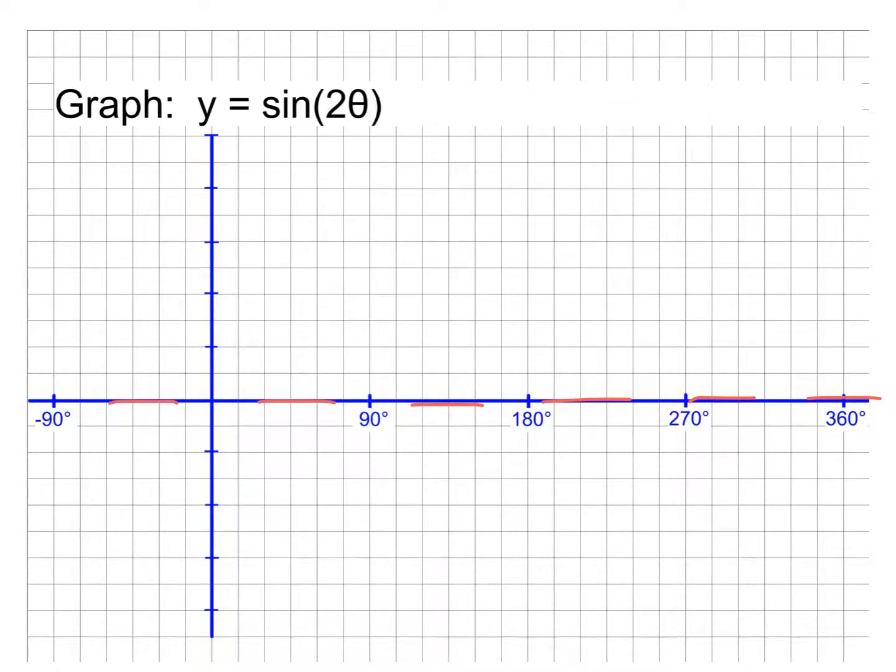Notice we're getting that by doing 360 divided by the 2. So, 360 divided by b or 2 pi divided by b can always tell us what that period is. In other words, how wide the wave should be. Here's a couple examples to also have in your notes.